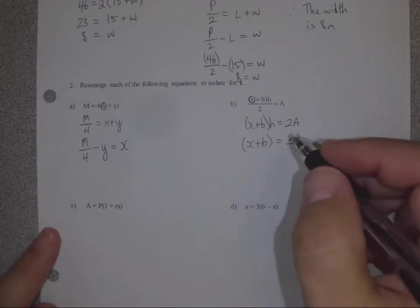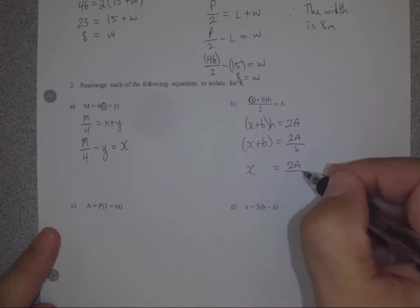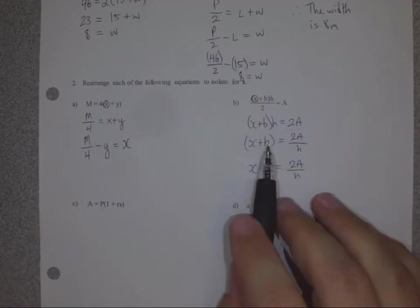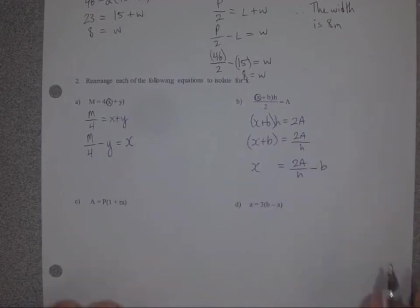And the last thing, the brackets don't matter anymore, so x by itself should equal 2a divided by h. How do we get rid of it plus b again? We subtract b from the other side. You guessed it. Good.